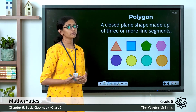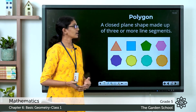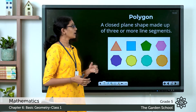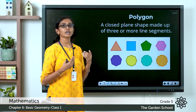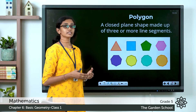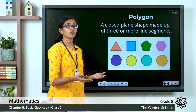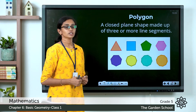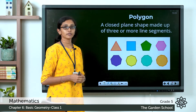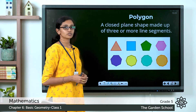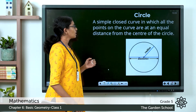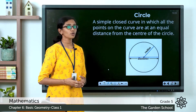What do you mean by a polygon? A polygon can be defined as a closed plane shape made up of three or more line segments, which are straight lines. A plane shape is a shape that can be drawn on a flat surface. Shapes that are made up of three or more line segments and are closed are called polygons.